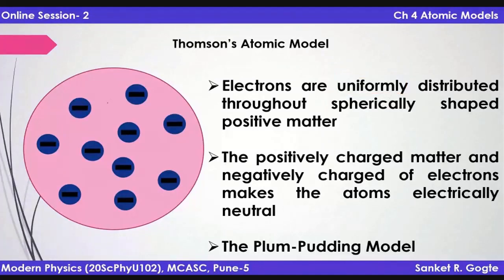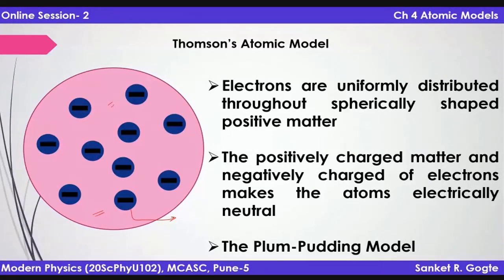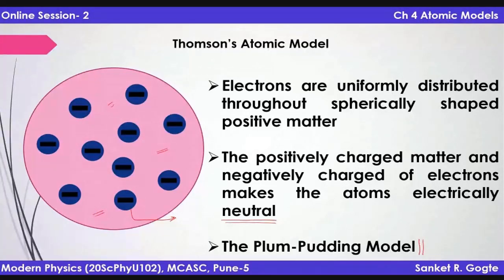This positive matter and the electrons combined have charges that are always neutral. The positive charge of the pink matter is the same as the collective negative charges of all the electrons, so the atom as a whole is electrically neutral. Because of the structure of this model, it is sometimes called the plum pudding model.